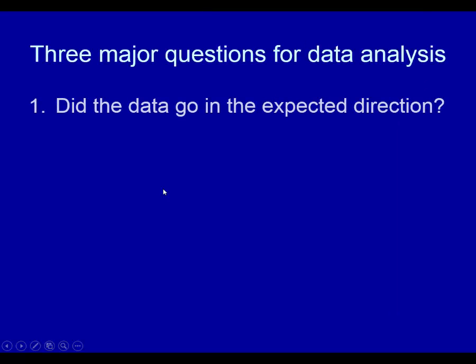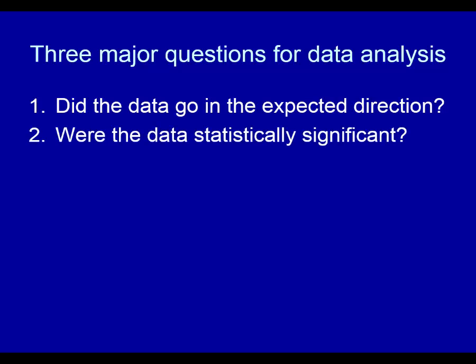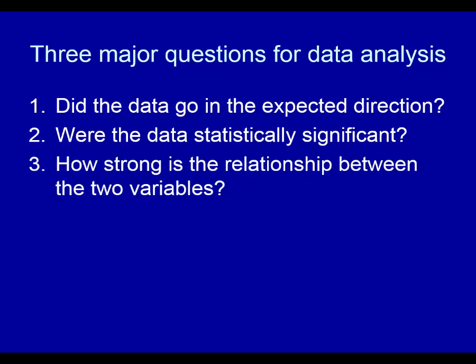Three major questions for data analysis. The first one: did the data go in the expected direction? Meaning, did the data show that those who exercised were better off? Number two: were the data statistically significant? You cannot draw conclusions about a relationship between variables if that data failed to be statistically significant, because it means there's too much likelihood the data could be explained by chance. Third: how strong is the relationship between the two variables? For example, did the exercisers do just a little bit better than non-exercisers or did they do a lot better?